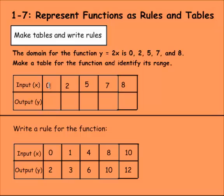All we have to do to get the output now is to multiply each one times two, because that's what's happening to x here. So zero times two is zero, two times two is four, five times two is ten, seven times two is fourteen, and eight times two is sixteen. So that's all we have to do for this one, make that table using that input and output rule function here.